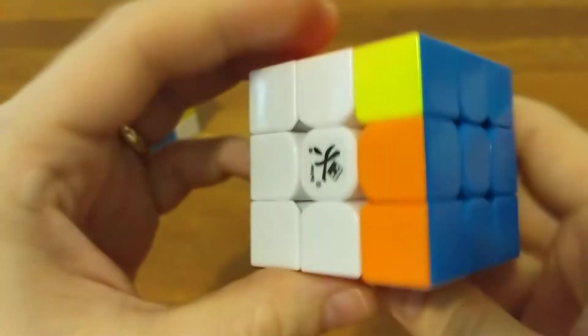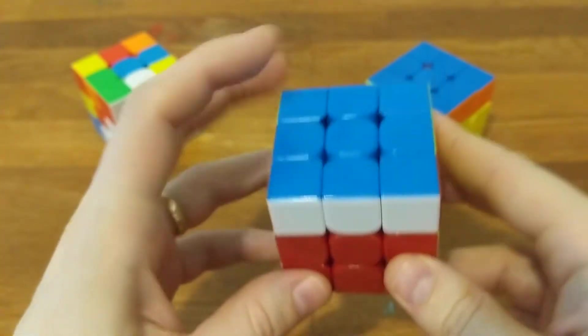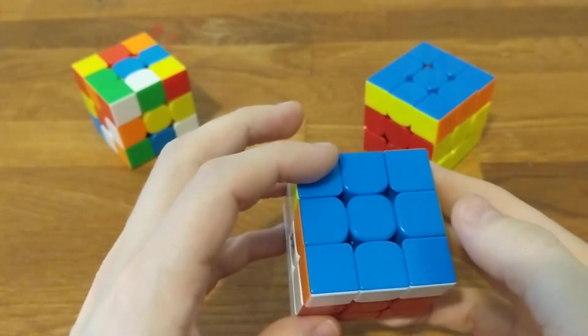you can see that the cube now has three unsolved edges: one, two, three, and three unsolved corners: one, two, three.